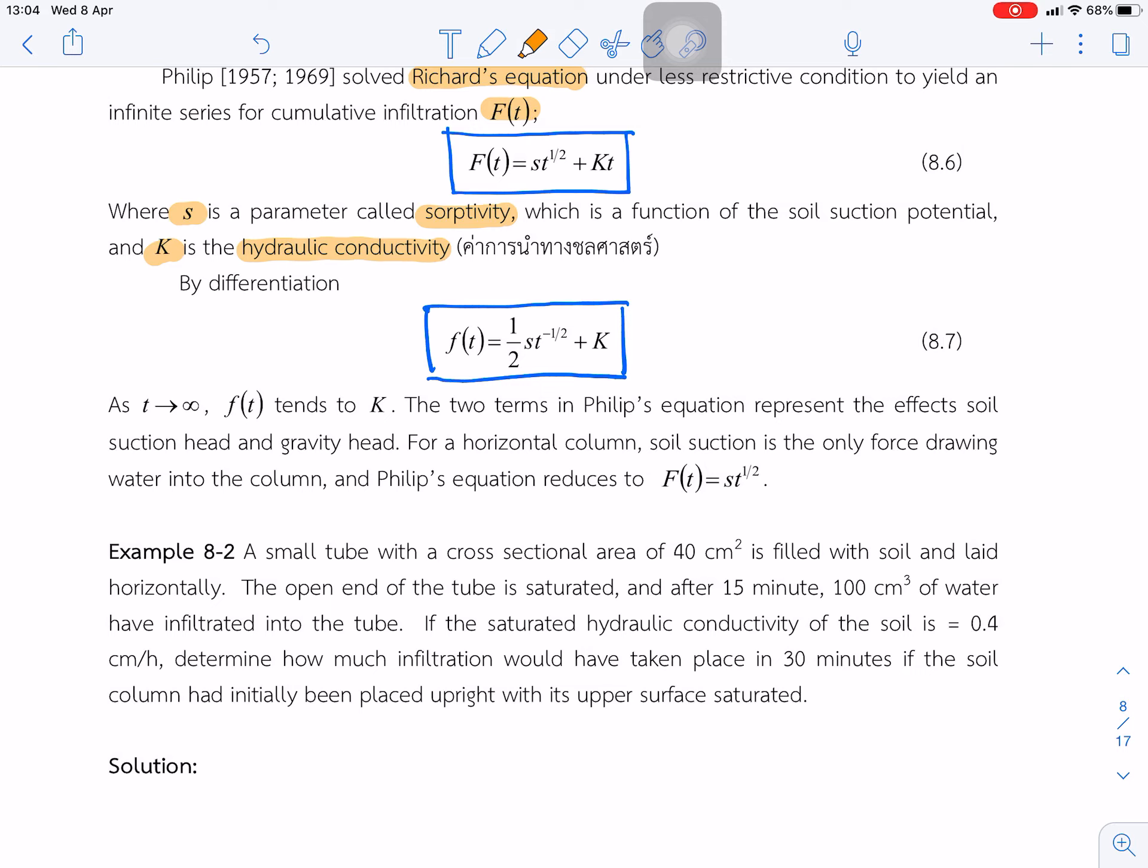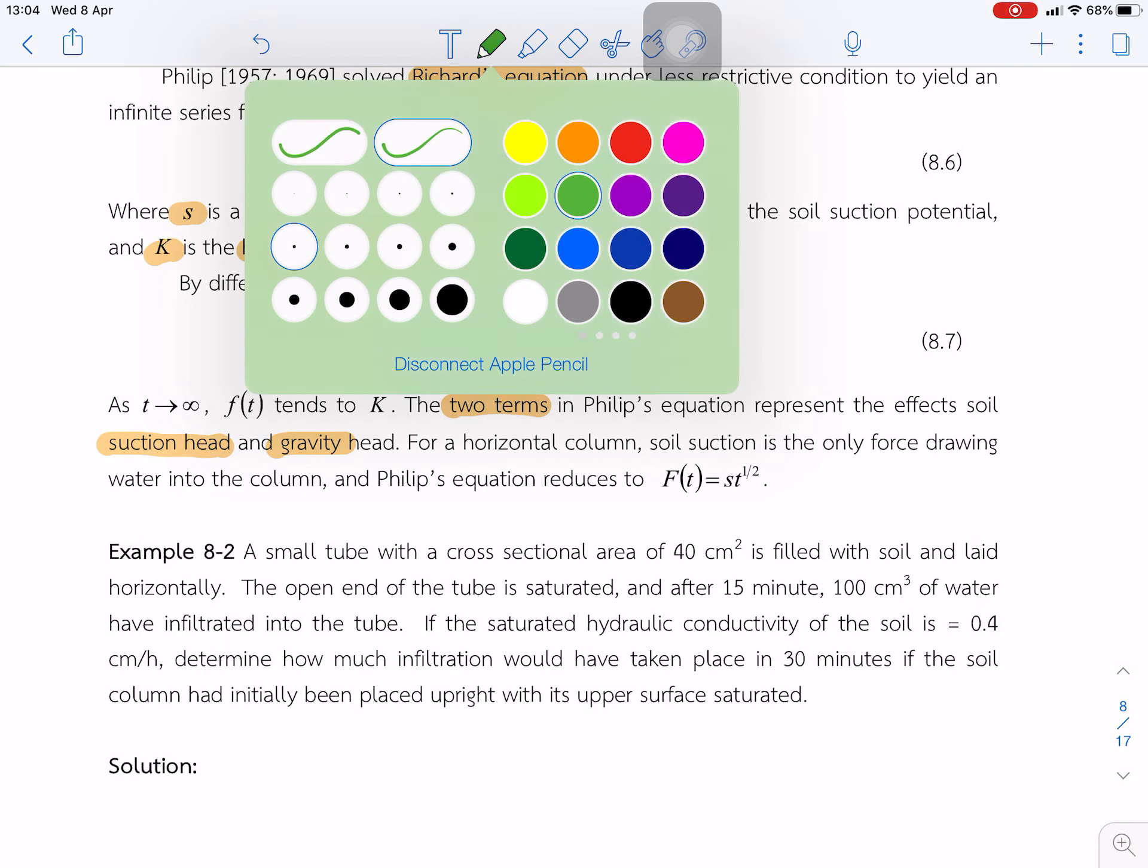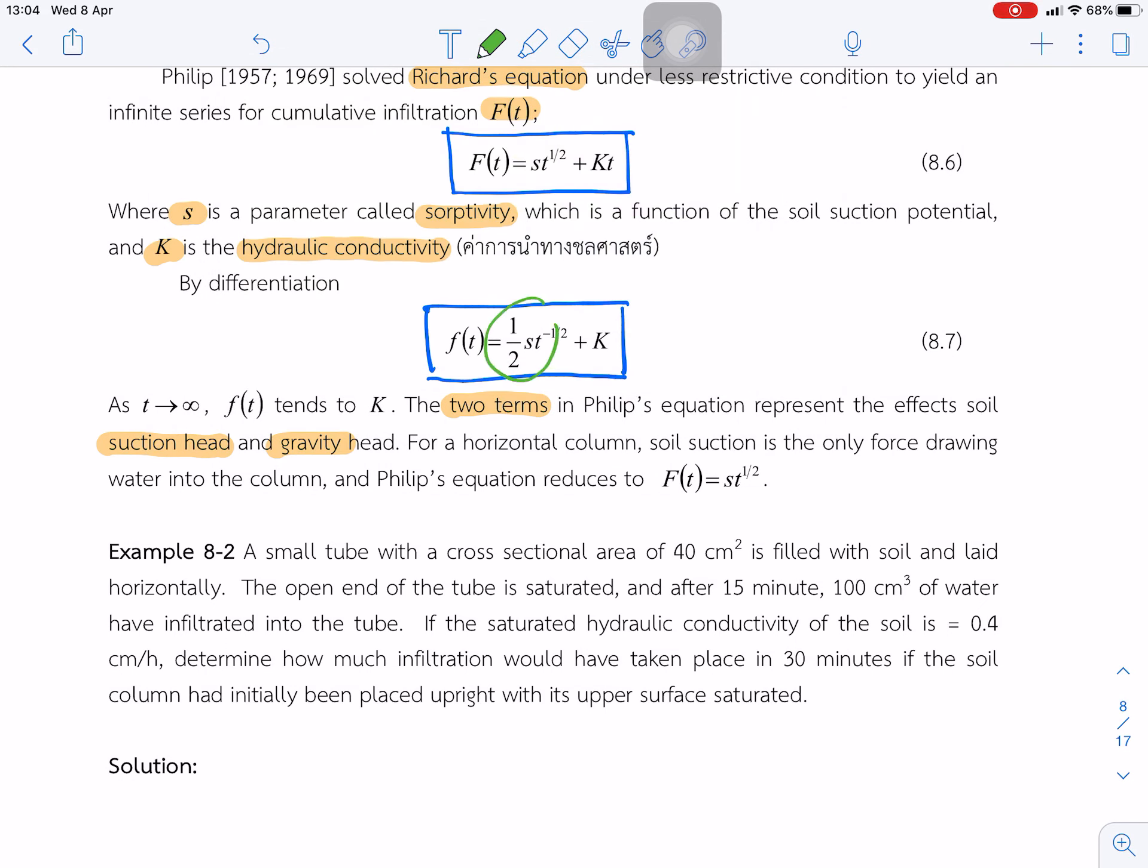Let's look at this equation. The second equation has two terms in the Philip equation. It affects the soil suction head and gravity head. So this term represents the effect of the soil suction head, and this term represents the gravity head.